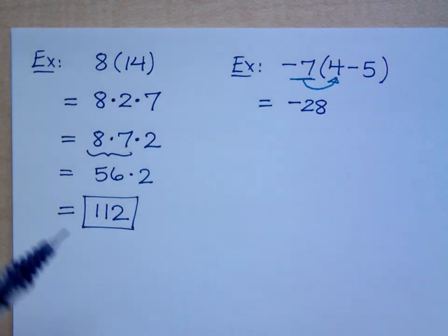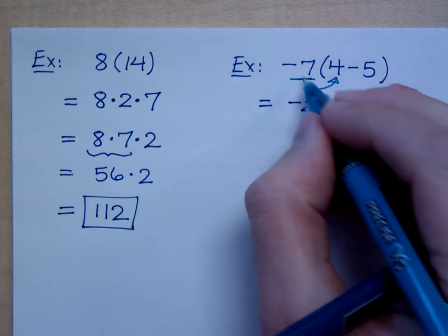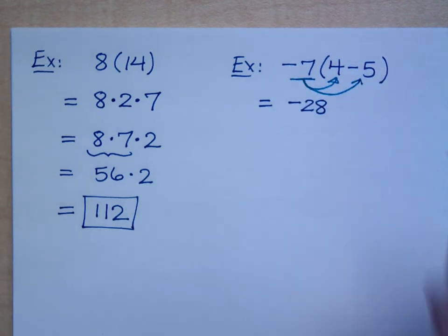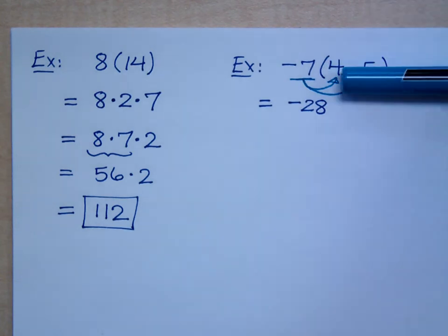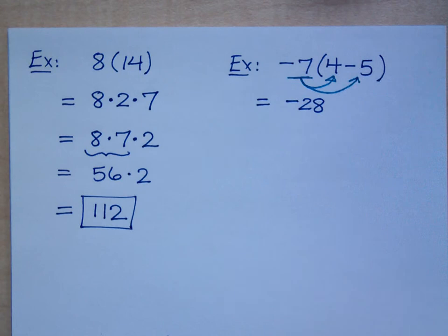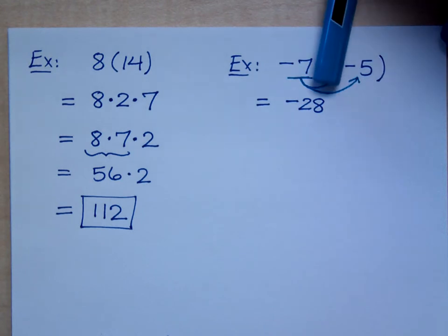Now, the next part you have to be very, very careful about. The next piece is negative 7 still times what number? Negative 5. Times negative 5. Look at this. Negative 7 times 4 is negative 28, right? The other part I have here is negative 7 times negative 5. What is that?